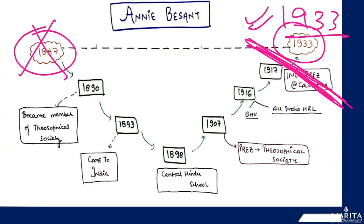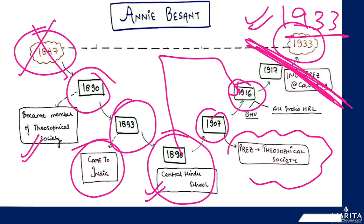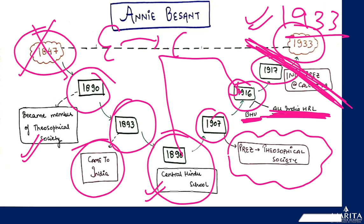Key timeline for Annie Besant: 1890 she became a member of the Theosophical Society. 1893 she came to India. 1898 she set up the Central Hindu School in Banaras, which became the foundation for the Banaras Hindu University (BHU) established in 1916. 1907 she became president of the Theosophical Society. 1916 she set up the All India Home Rule League with headquarters at Adyar. 1917 she became the first woman president of the Indian National Congress at the Calcutta session.